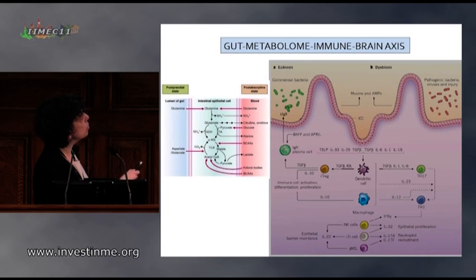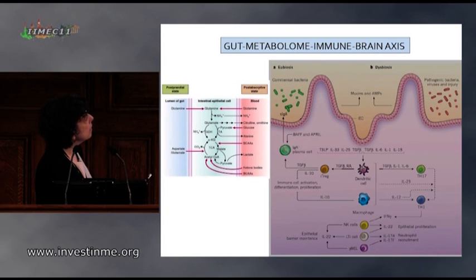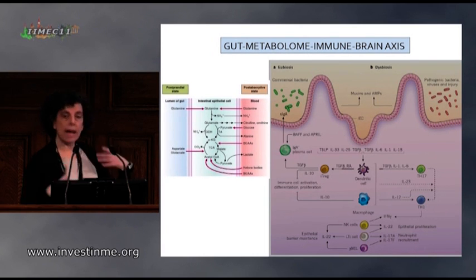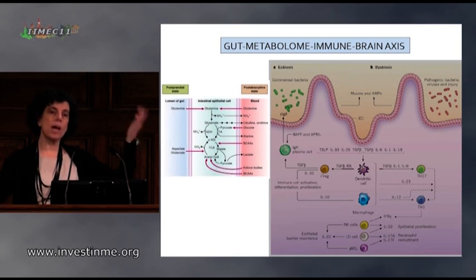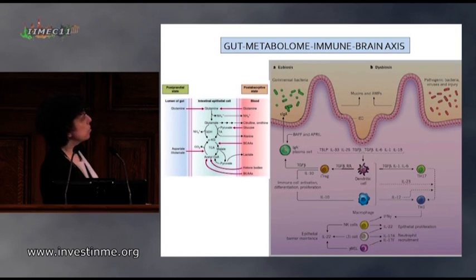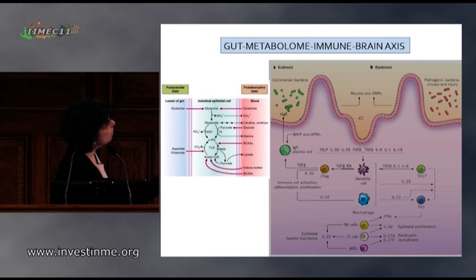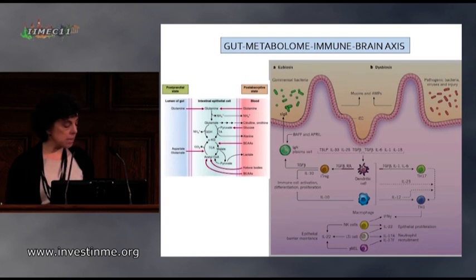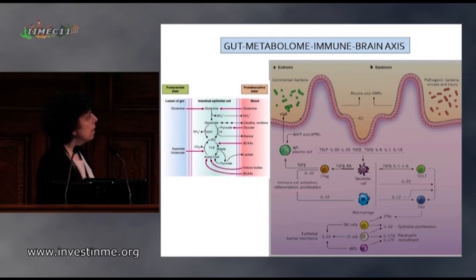Under eubiosis — with natural commensal bacteria in a healthy scenario — IgA-producing plasma cells are conditioned by commensal bacteria, producing cytokine balance that allows you to respond to bad actors and then shut down the response when they've been contained. In dysbiosis, this is disrupted, leading to uncontained inflammation and perhaps an increase in autoimmunity.